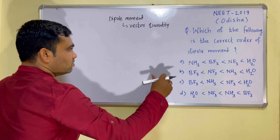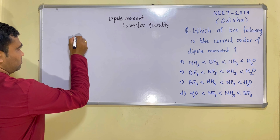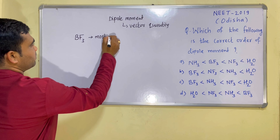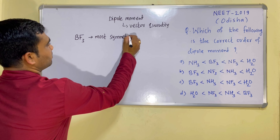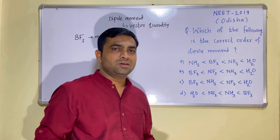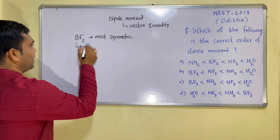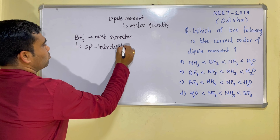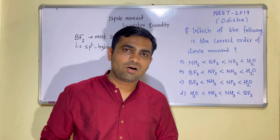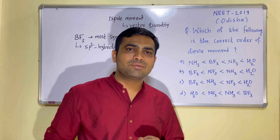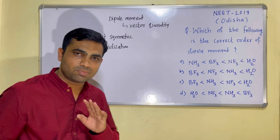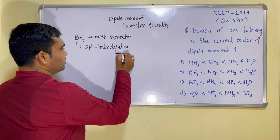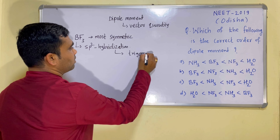Among the given four molecules, BF3 is the most symmetric molecule. In BF3, boron has SP2 hybridization. Boron has only three valence electrons and all three are used in bonding. The steric number for BF3 is three, giving SP2 hybridization. This means BF3 is a trigonal planar molecule.